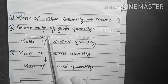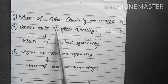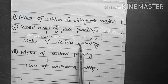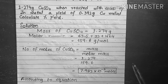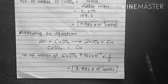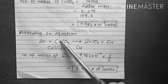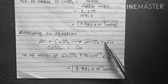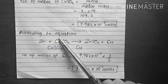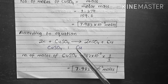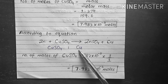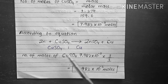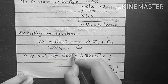In the second step, we convert the moles of the given quantity — copper sulfate — into moles of the desired quantity, which is copper. Using the balanced equation, zinc plus copper sulfate produces zinc sulfate plus copper, we compare copper sulfate with copper. Always write your unknown or desired quantity on the right side.